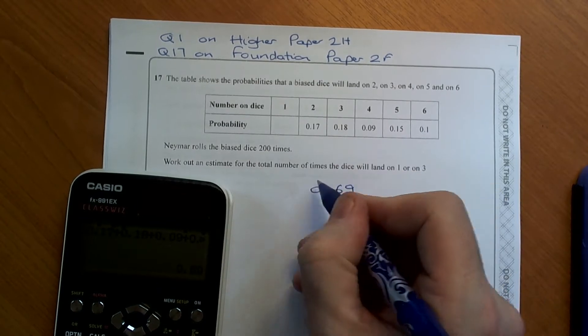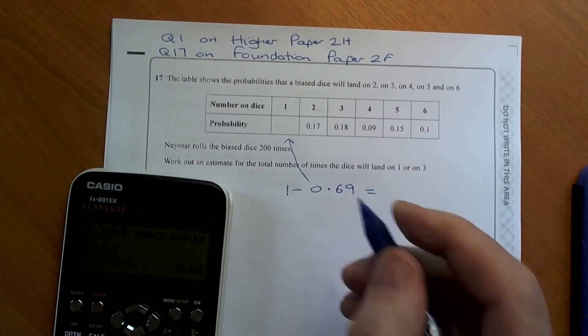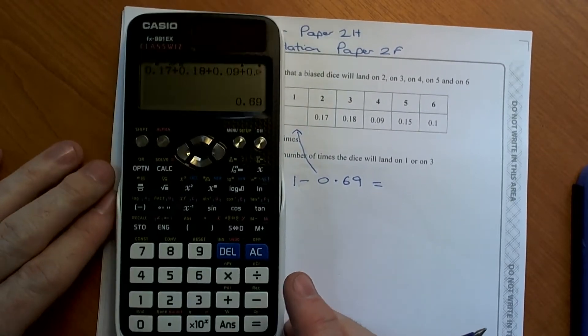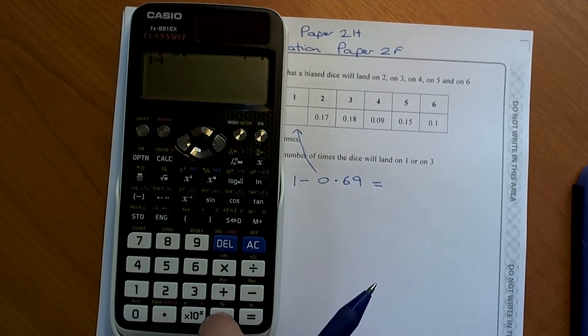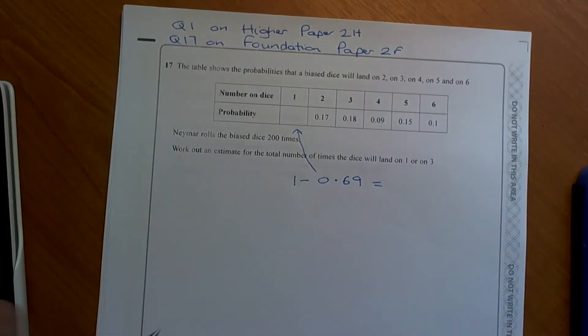So to get that probability in there we need to do 1 minus 0.69. So a quick way to do that on the calculator, 1 minus the answer button and that gives us 0.31.